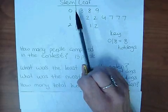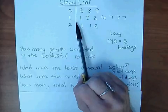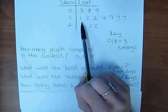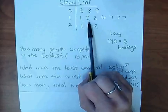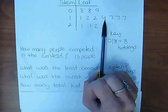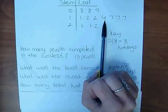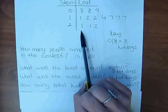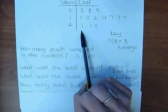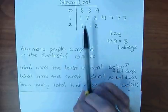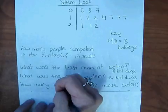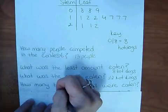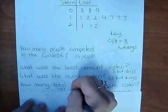Adding up all the values: 8, 8, 8, 11, 12, 12, 14, 17, 17, 17, 21, 21, and 22. So in this competition, 189 total hot dogs were eaten.